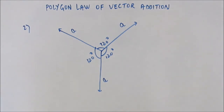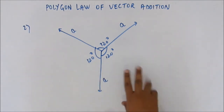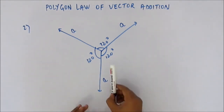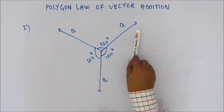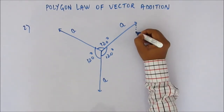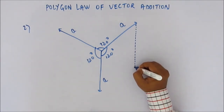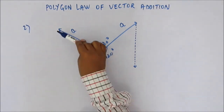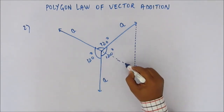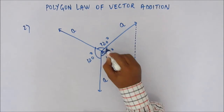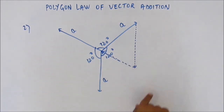To solve this using the polygon law, try to form a polygon out of these three vectors. A vector can be shifted parallel to itself. If we shift this vector parallel to itself and bring it here, it looks like this; and if we shift this vector and pull it backwards, it forms a triangle.